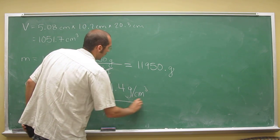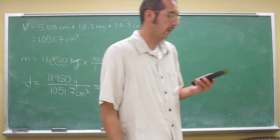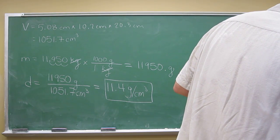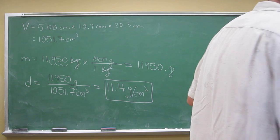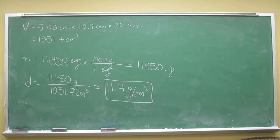So that's the density of this particular unknown metal. What we'll do in a later problem is compare this to a list of densities and figure out what these unknown metals may be.